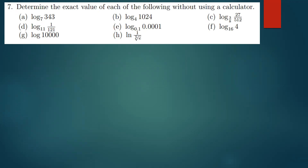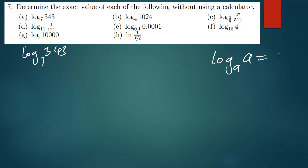Let's quickly begin. The question says we have to determine the exact value. The first one is the log of 343, base 7. The basic concept in this question is you have to understand that the log of anything, base that same thing, is always equal to 1.